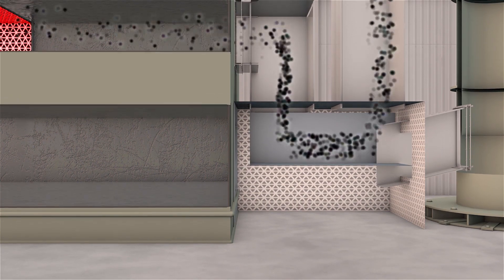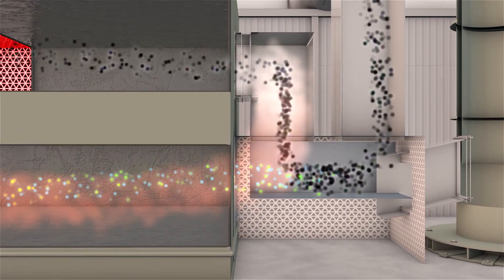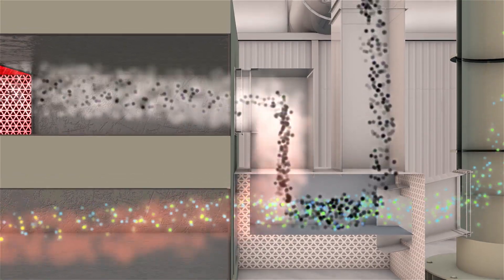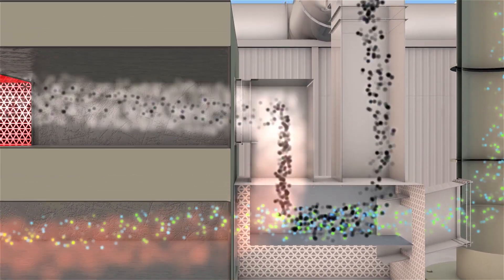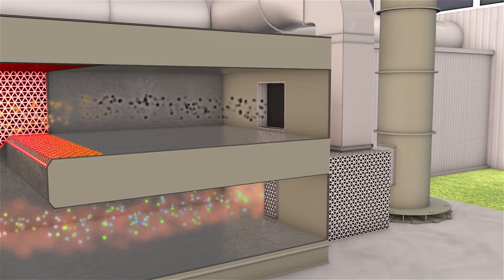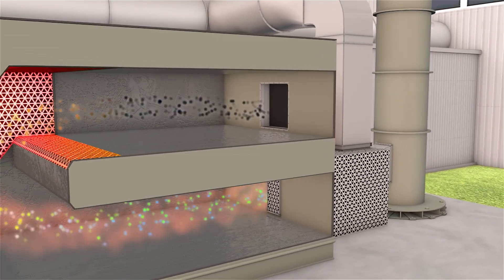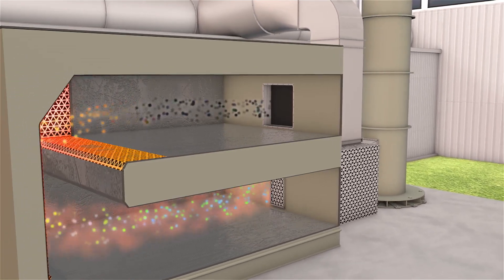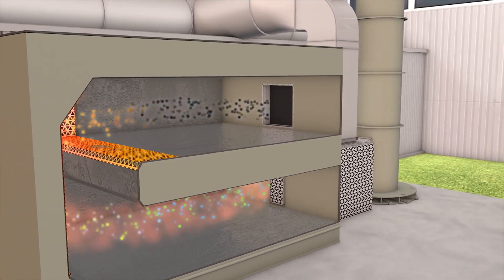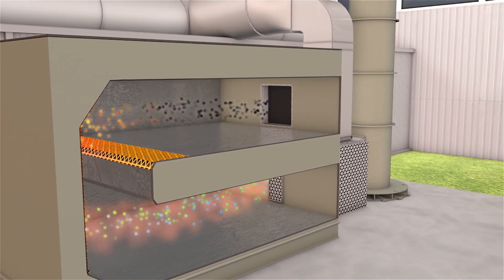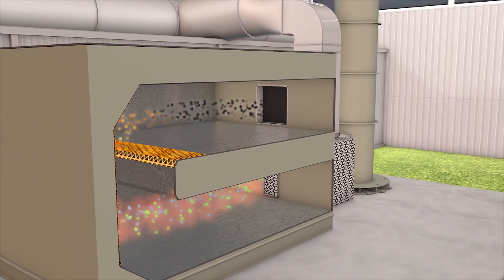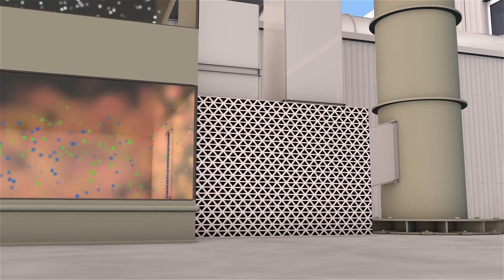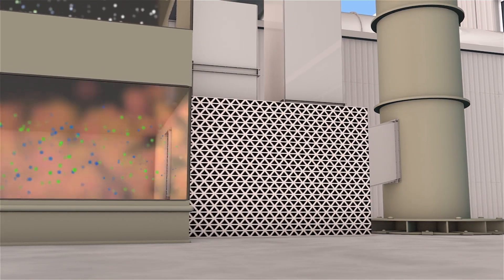By implementing a heat exchanger, existing heat can be captured or recuperated to be reused within the system. Recuperative thermal oxidizers are an alternative to straight thermal oxidation. Adding a heat exchanger allows the system to reuse energy, which helps reduce operating costs.